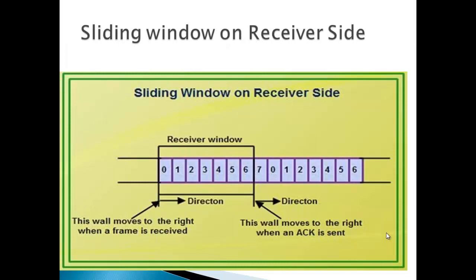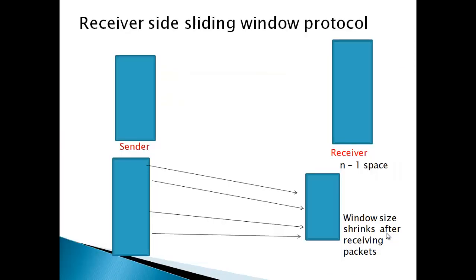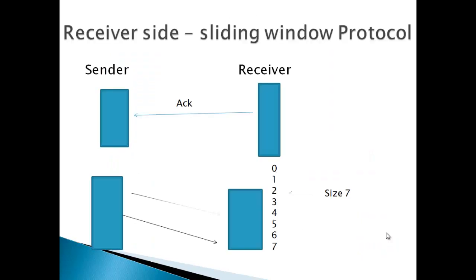Sliding window on the receiver's side. At the receiver's side of transmission, the receiver window has n minus 1 space for frames. As new frames arrive, the size of the window shrinks. After receiving frames, the receiver window has shrunk. The receiver, after it sends acknowledgement, its window gets expanded to hold frames. If the size of the receiver window is 7, which means it has space for 7 frames, and 2 frames arrive, the window size shrinks, moving the boundary from 0 to 2. Now the window has shrunk by 2, so it can accept 5 more frames before it is required to send an acknowledgement.